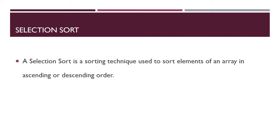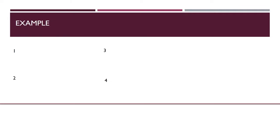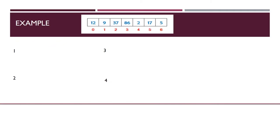To clearly understand the selection sort technique let us go through its algorithm step by step with an example. Suppose we have seven numbers stored in an array. Here is the list of n numbers: 12, 9, 37, 86, 2, 17, and 5. The array index starts at 0 and ends at 6.